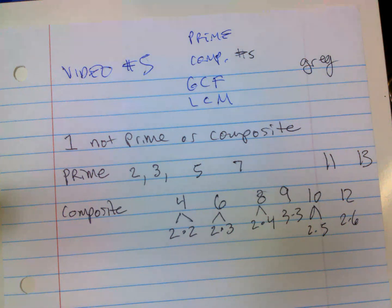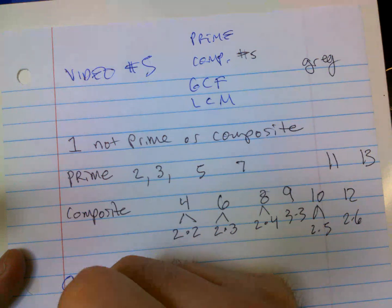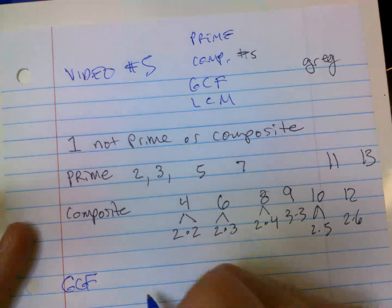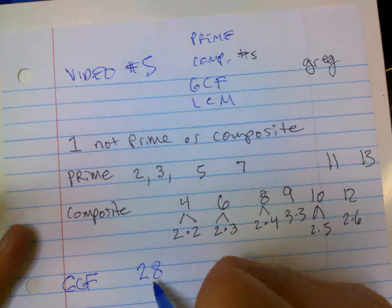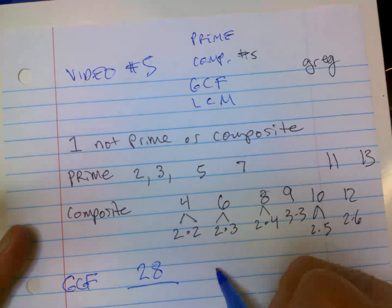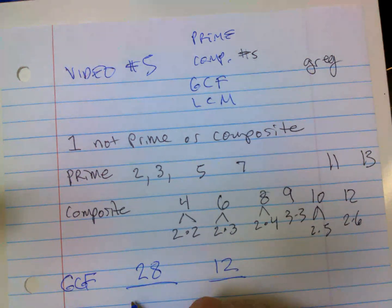All right, real quick, let's see how fast I can do greatest common factor. Greatest common factor is you want to make a table and just say, how are all the ways I can get this number? So let's say 28 and 12. We don't want to count one and 28, I'm looking for other factors.